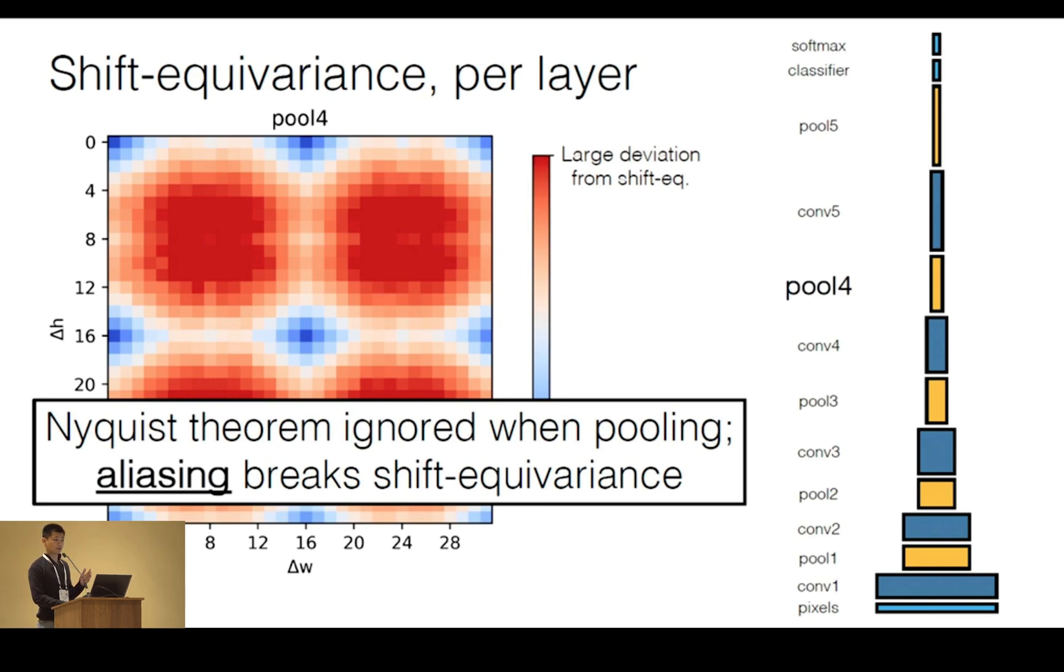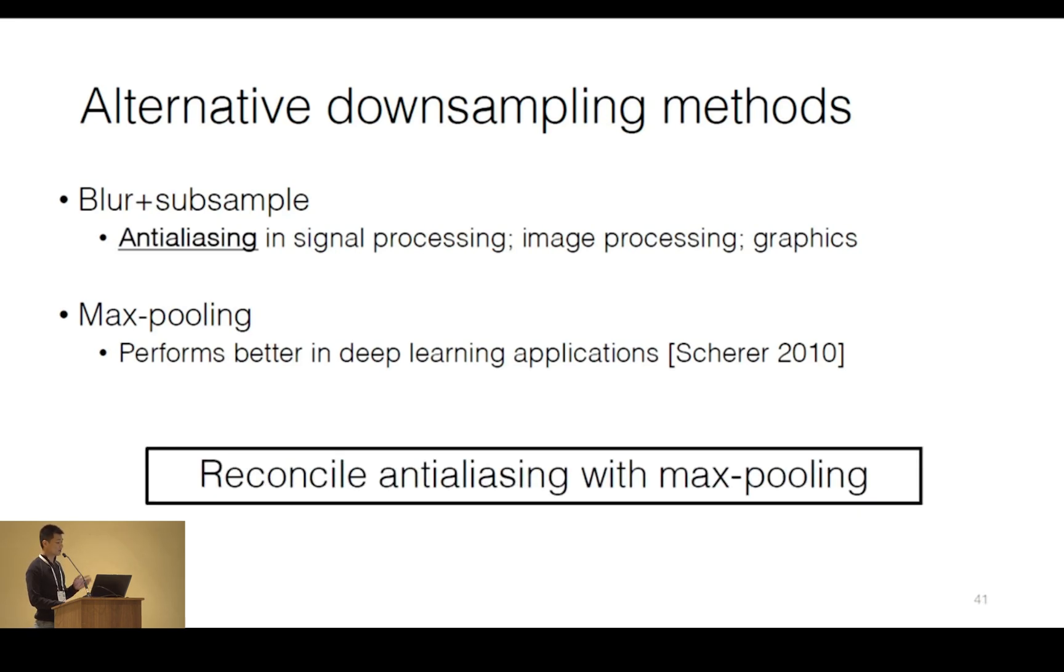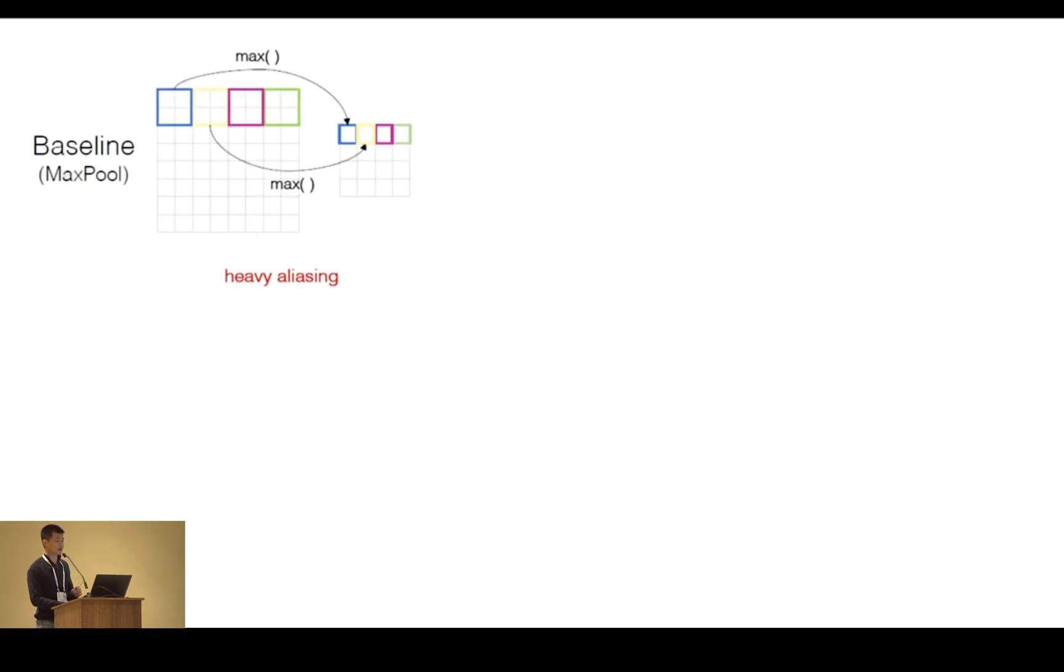Now, if you recall from your undergraduate signal processing or image processing course, what you may have been taught is that before downsampling a signal, what you need to do is blur it. You need to blur it as a means of anti-aliasing. In deep learning, historically, what we've seen through careful evaluations is that max pooling actually performs empirically better. What we'd like to do in our work is reconcile classic anti-aliasing with max pooling. To do so, we need to look at max pooling a little bit more closely.